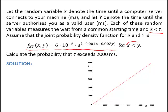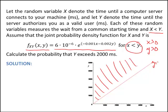And again, we have the condition that X is less than Y. We also know because they're both times that X is greater than 0 and Y is also greater than 0. So the region of interest where this joint probability density function is defined is the area above the line Y equals X in the first quadrant of the Cartesian coordinate system.